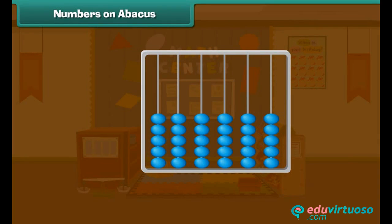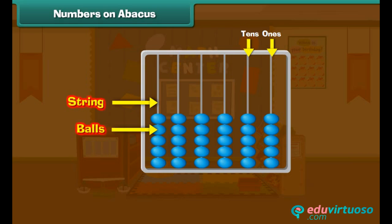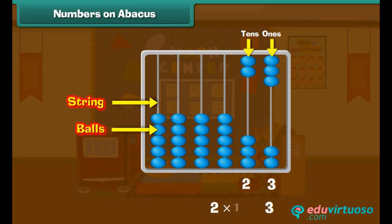Numbers on an abacus. We can use an abacus for counting. This is an abacus — it has many strings, and each string has many balls. We use the rightmost string to count ones, and the next string to count tens. This abacus has three balls in the ones string and two balls in the tens string, so the number is 23.